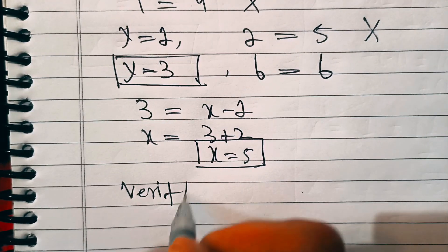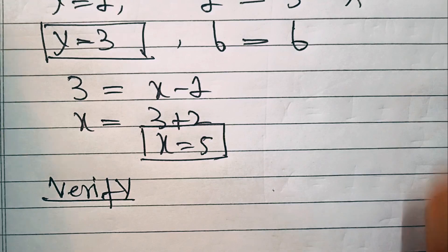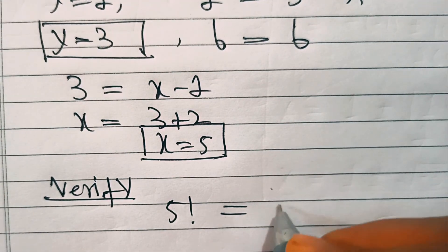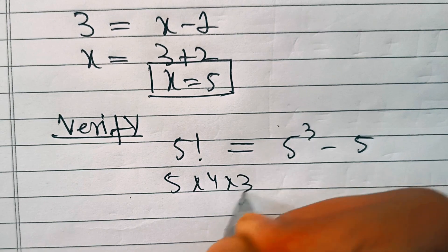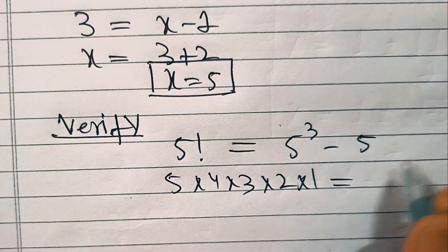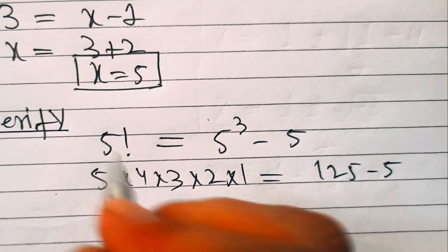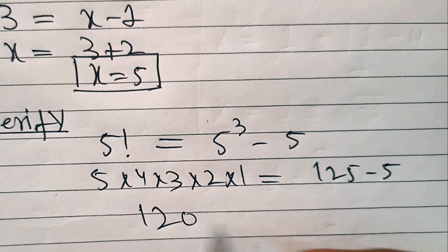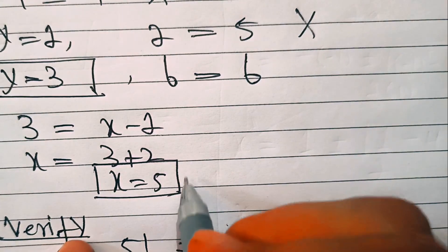Now we'll verify by putting this value into the given equation. Five factorial equals five cubed minus five. Five factorial is five into four into three into two into one. Five cubed is 125, minus five is 120. And indeed five factorial is also 120 — so x equals five is confirmed correct.